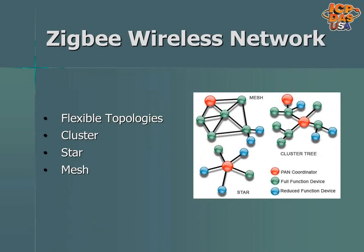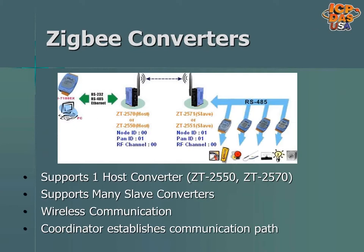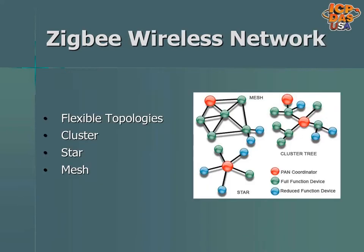ZigBee supports many flexible topologies like cluster, where nodes are arranged around the host converter in little bunches; mesh, where the host coordinator is at one end; or star, where the host coordinator is in the middle. Each ZigBee network has one RF channel and PAN ID so the devices can be in the same network. Each node has a unique node ID to differentiate each device from the others on the network. Each network has one host converter, which coordinates the communication path over the network. ZigBee networks can have many slave converters or slave I/O modules.